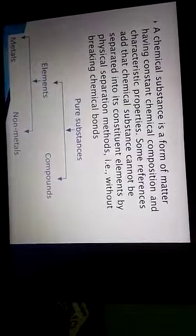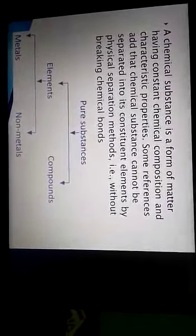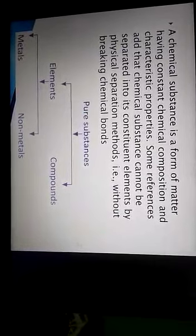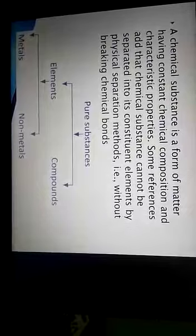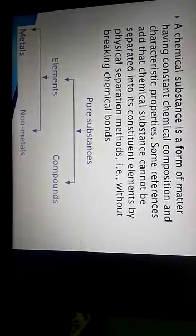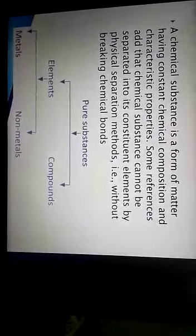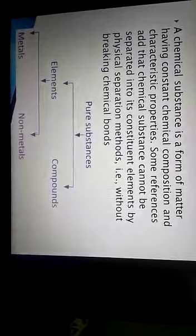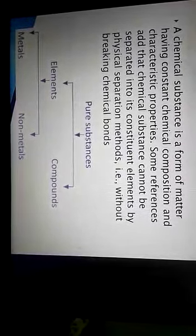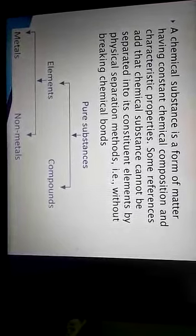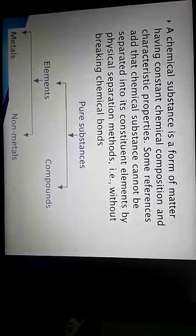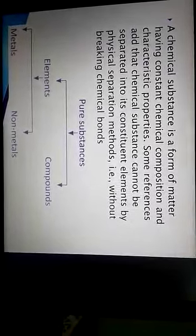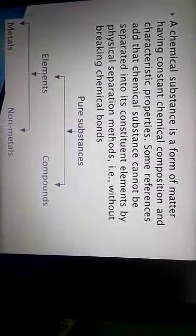What is an element and compound? A chemical substance is a form of matter having constant chemical composition and characteristic properties. Some references add that chemical substances cannot be separated into its constituent elements by physical separation methods without breaking the chemical bonds. Only if physical separation happens, the chemical bonds between them in a matter will not happen.